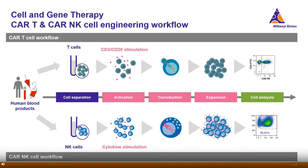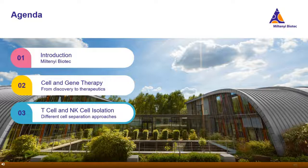You will always start off with blood products like whole blood, leukapheresis, buffy coat, or PBMC to isolate your T cells or NK cells. Next, the cell populations will be activated and transduced. After successful gene delivery, cells will be expanded in dedicated media and cytokine cocktails. At the very end of the workflow, you will look at the functionality by flow cytometric analysis.